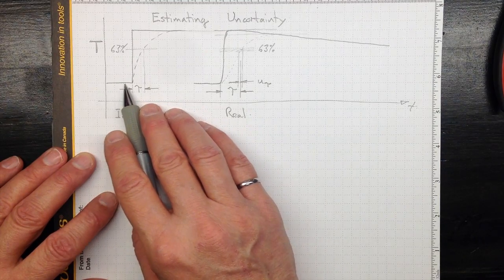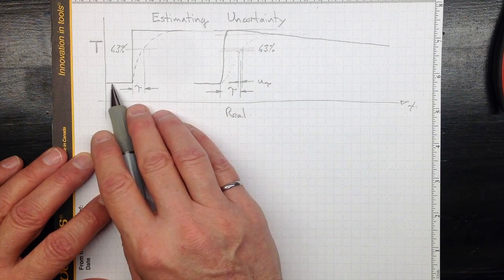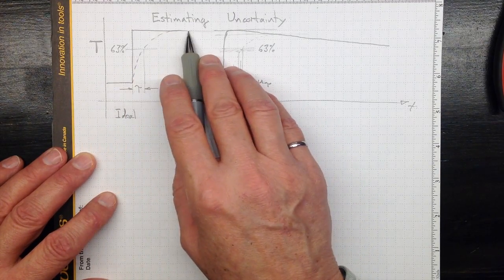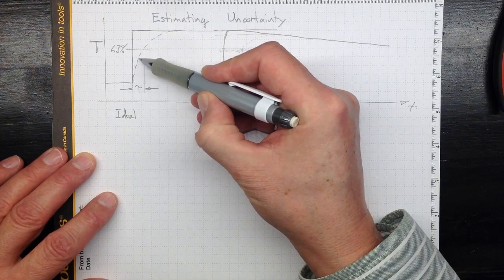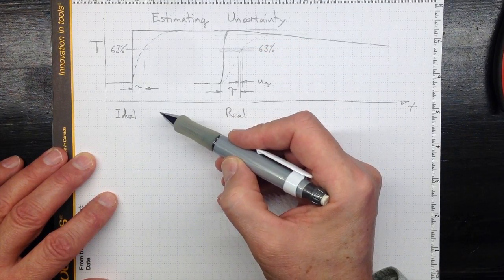If we had an ideal situation with a step function change in temperature—suddenly going from one temperature to another—we'd expect a first-order exponential decay response from the sensor.